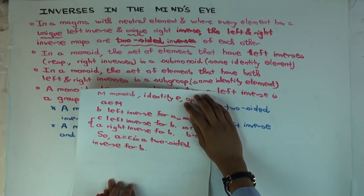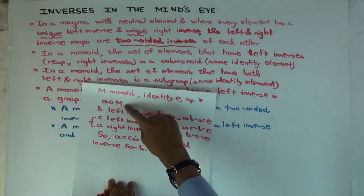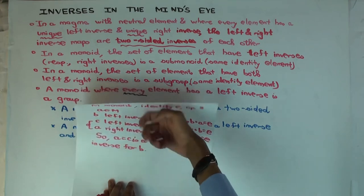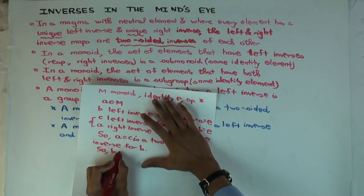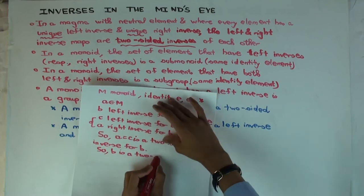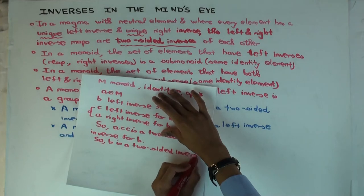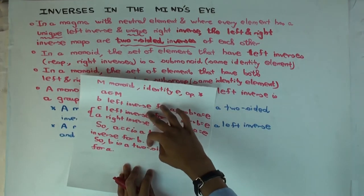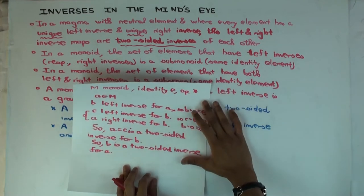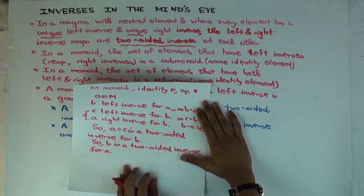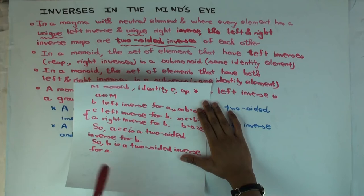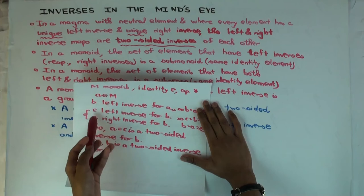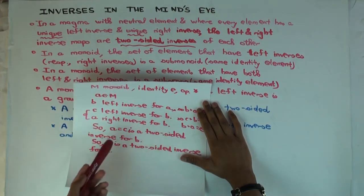A is a two-sided inverse for B. But what we really wanted was a two-sided inverse for A. Since A is a two-sided inverse for B, it follows that B is a two-sided inverse for A. So B is a two-sided inverse for A. What we've shown is that starting with any arbitrary element A in the monoid, we can find a two-sided inverse for that element. The real trick was: after taking the left inverse B of A, we took the left inverse C of B again, which gave us an element B with both a left and right inverse.